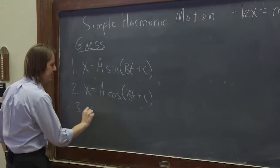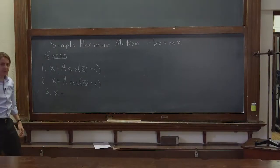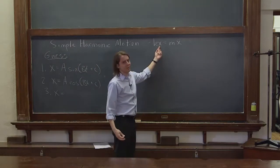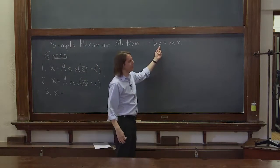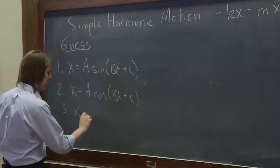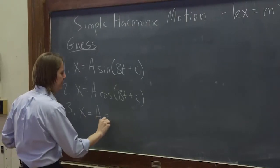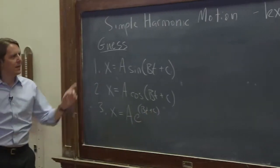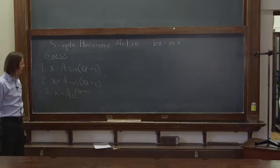Let's see, what other function does it? x equals the exponential function, right? e to the x, the derivative of e to the x is e to the x. Take another derivative, it's still e to the x. So exponential functions do this. We could write a nice general exponential function, ae to the bt plus c. And that would also follow the rule. That's another good guess.